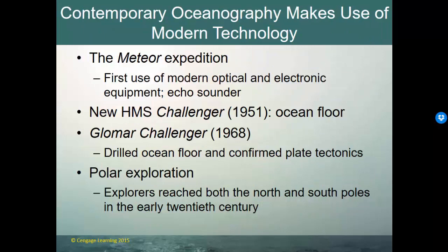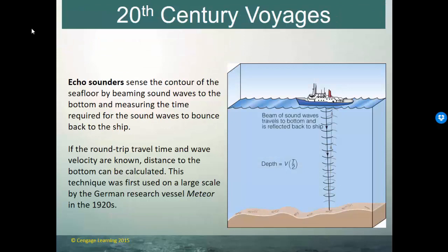Massive advancements in ocean exploration occurred in the 20th century. Among the technologies used was the echo sounder — the ability to map the ocean floor using sound waves. Sound waves are emitted from a ship pointing straight down, bounce off the seafloor, and travel back up to the ship. A listening device determines the travel time of the echo from the ship to the seafloor and back, allowing calculation of ocean depth.